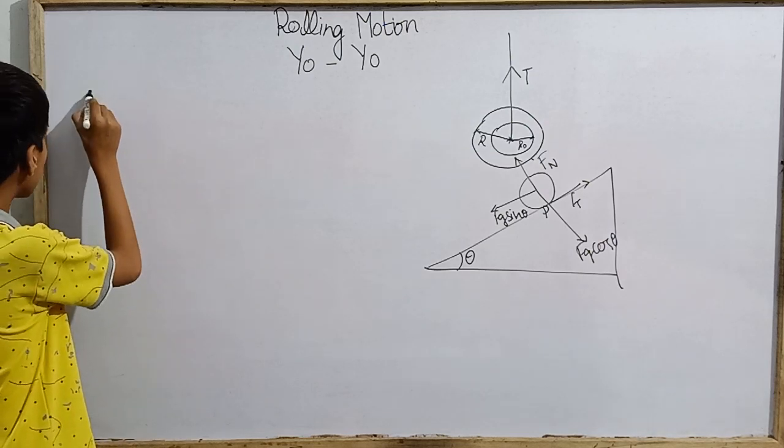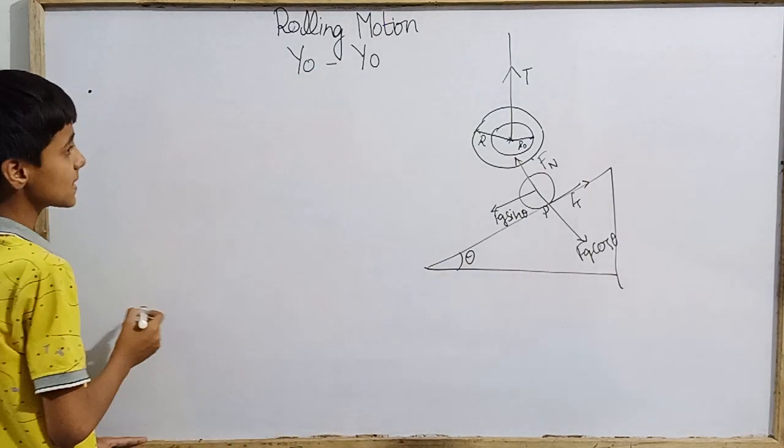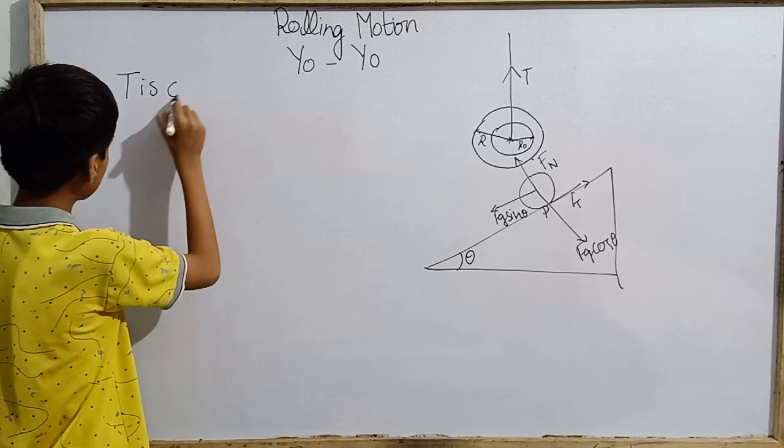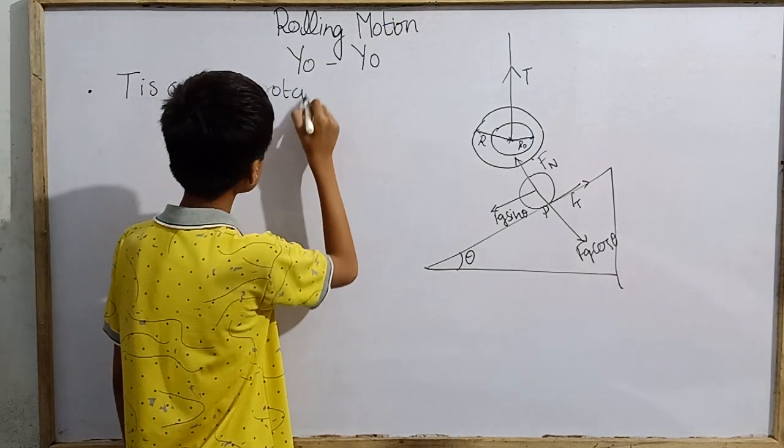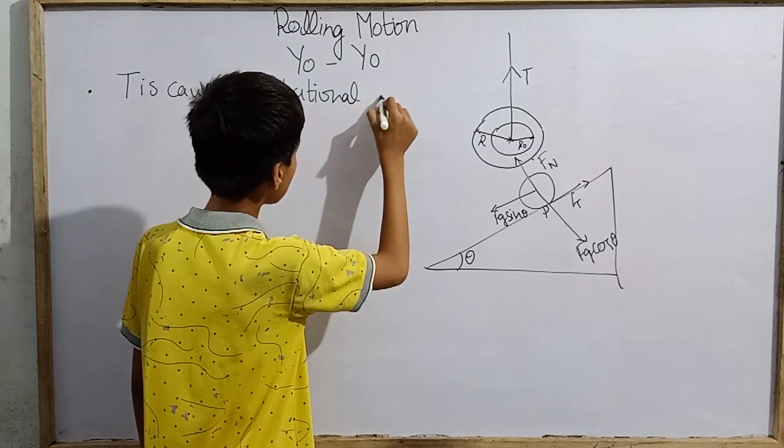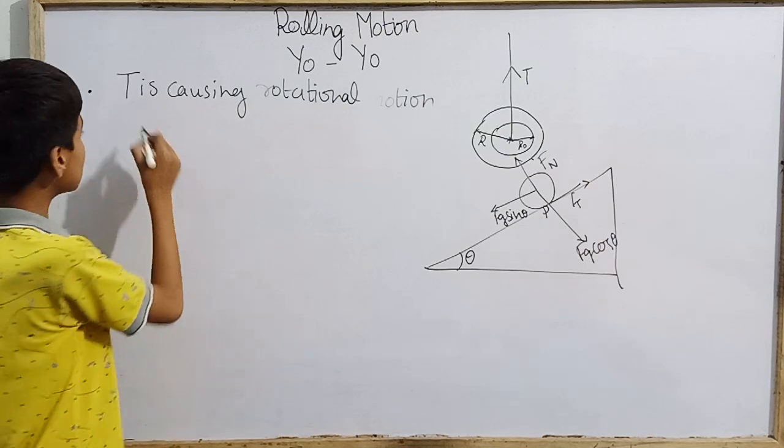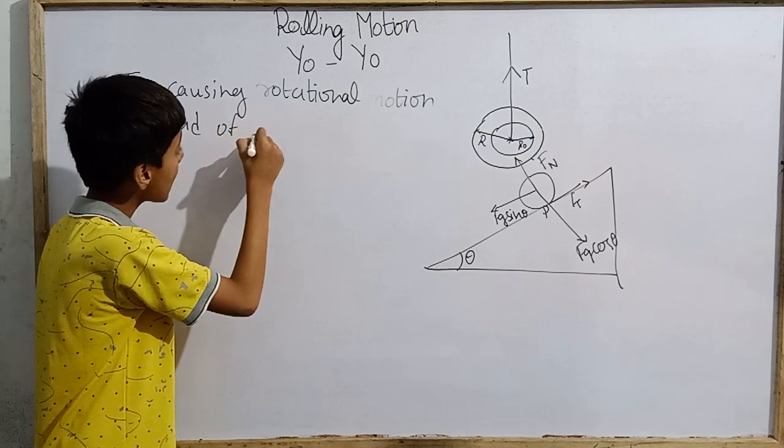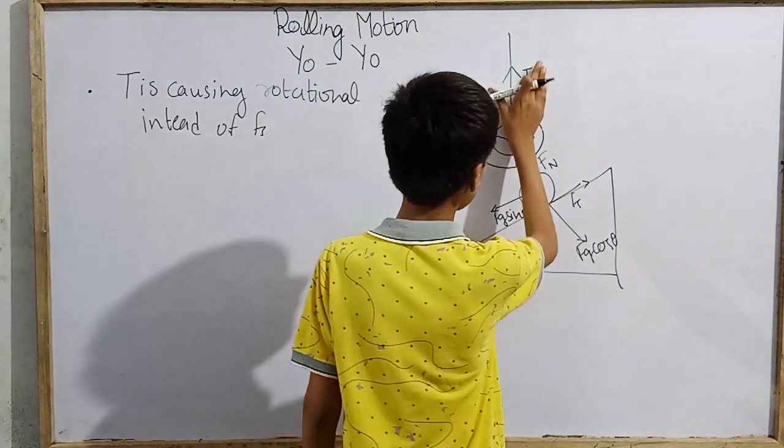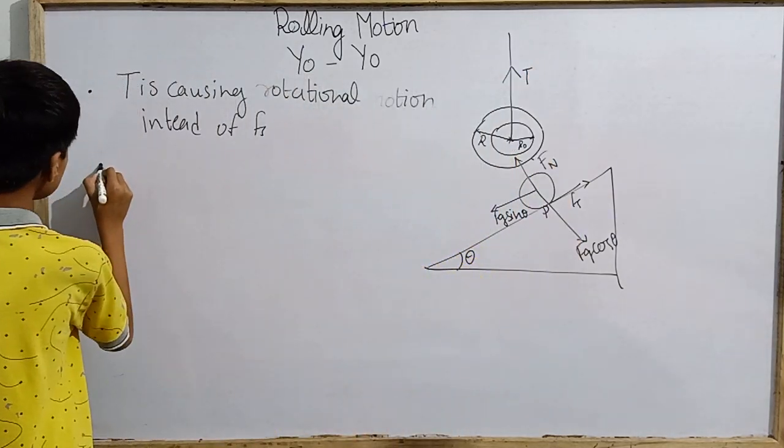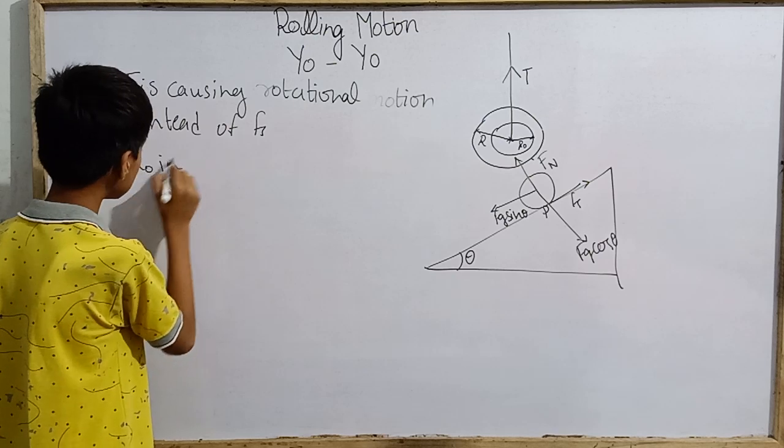But there is also one important thing: there is tension here in this string while there is no frictional force, there is no frictional force here if we consider it to be slow. There are some important points to note which differentiate a little bit. The first is that here the rotational motion is because of T, tension is causing the rotational motion instead of f_s.